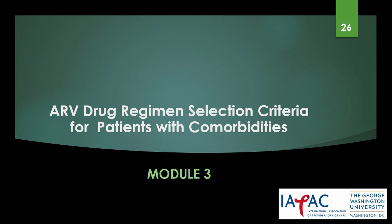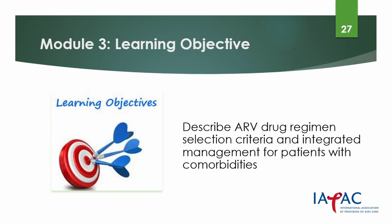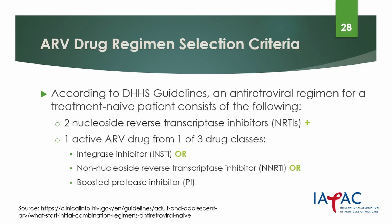In the next part of the webinar, we will review antiretroviral drug regimen selection for patients with comorbidities. According to DHHS guidelines, an antiretroviral regimen for a treatment-naive patient generally consists of two nucleoside reverse transcriptase inhibitors plus one active ARV drug from one of three drug classes: either an integrase strand transfer inhibitor, a non-nucleoside reverse transcriptase inhibitor, or a boosted protease inhibitor boosted with a pharmacokinetic enhancer. There are two pharmacokinetic enhancers: cobicistat and ritonavir.